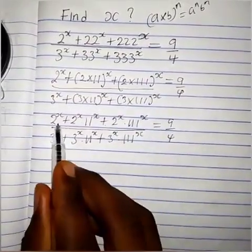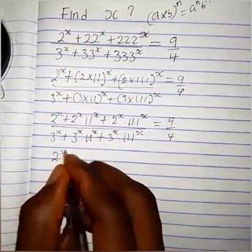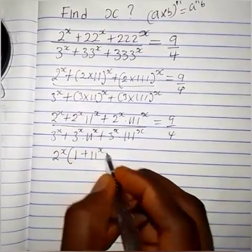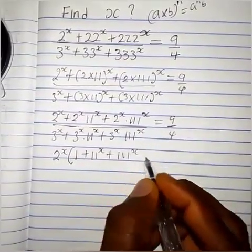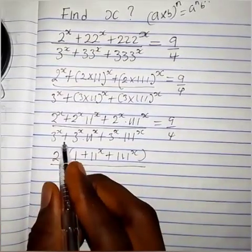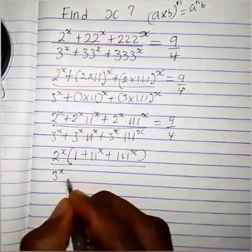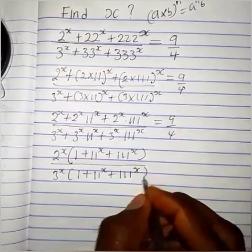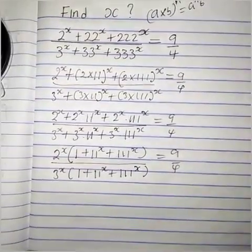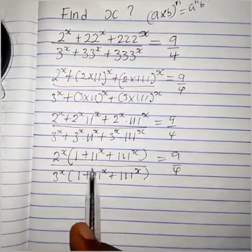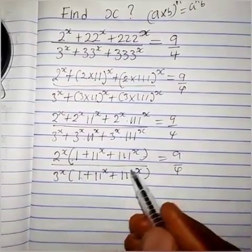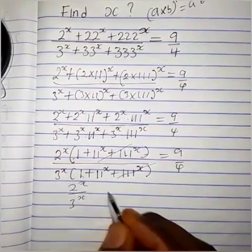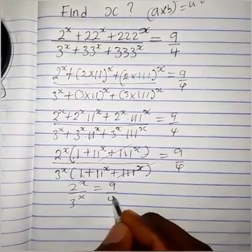In the numerator, 2 raised to the power x is common, so let's pull it out: we have 2 raised to the power x times (1 plus 11 raised to the power x plus 111 raised to the power x). The same thing in the denominator: 3 raised to the power x times (1 plus 11 raised to the power x plus 111 raised to the power x), which equals 9 over 4. The bracket is the same in numerator and denominator, so we cancel it out, leaving 2 raised to the power x over 3 raised to the power x equals 9 over 4.